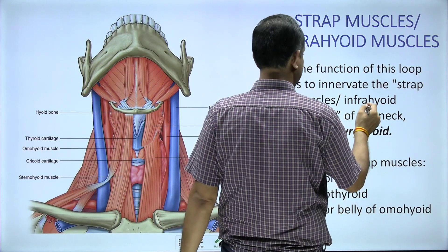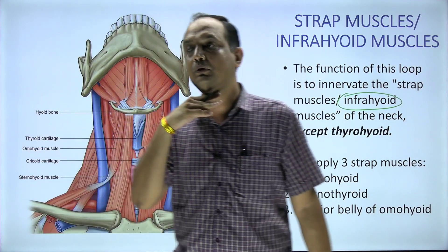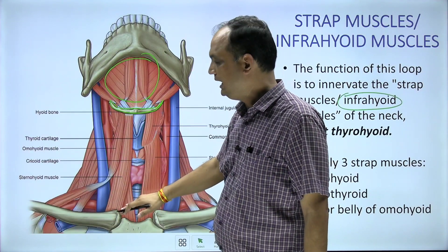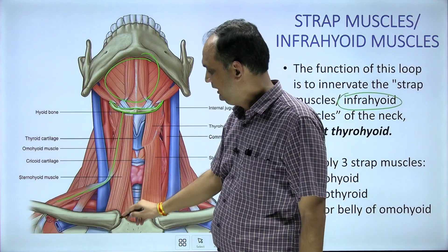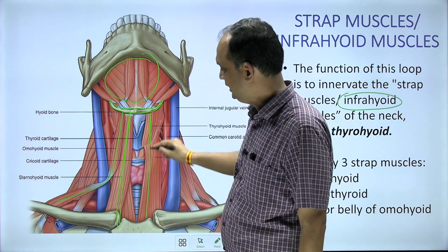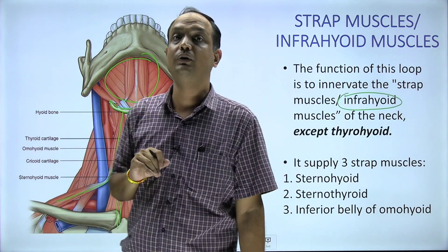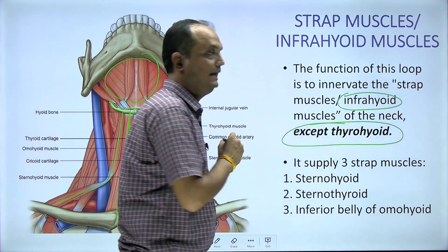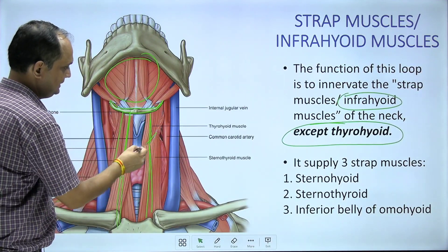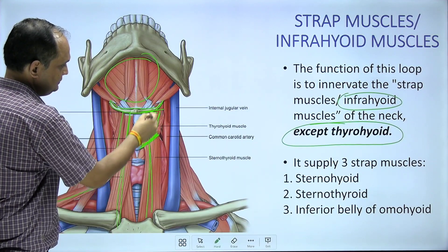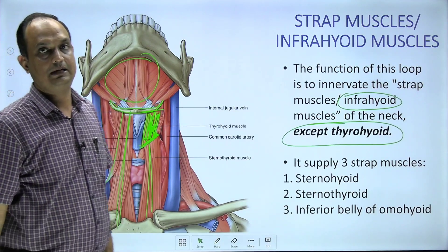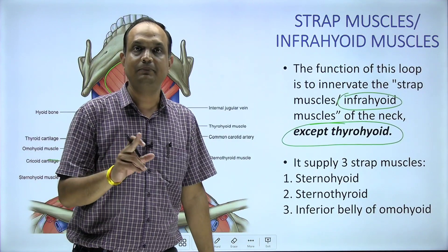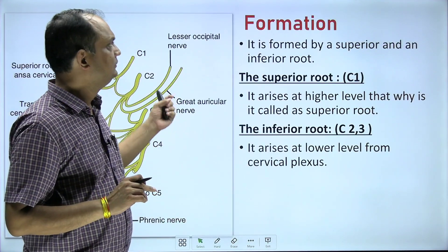The ansa cervicalis supplies the muscles present in the infrahyoid region. The hyoid bone divides the region — the area above is suprahyoid and below is infrahyoid. The infrahyoid muscles are: omohyoid, sternohyoid, thyrohyoid, and sternothyroid — four muscles in total. However, the ansa cervicalis supplies all infrahyoid muscles except the thyrohyoid. The thyrohyoid connects the thyroid cartilage and the hyoid bone. The remaining three muscles — sternohyoid, sternothyroid, and the inferior belly of omohyoid — are supplied by the ansa cervicalis.